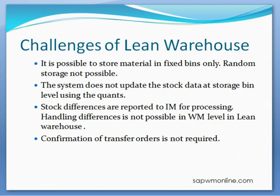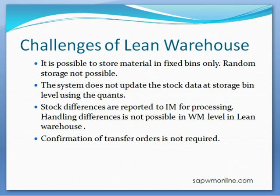As mentioned, the lean warehouse is a scaled down version of the standard warehouse management solution, so there are certain challenges. Materials can be stored in fixed bins only — no random bin storage is possible. The system does not update the stock data at storage bin level using quants. Inventory is managed at storage location level. Differences cannot be processed at WM level. Confirmation of transfer orders is not required; you can create a transfer order and use it as a pick list, then simply do goods issue of the delivery after picking.